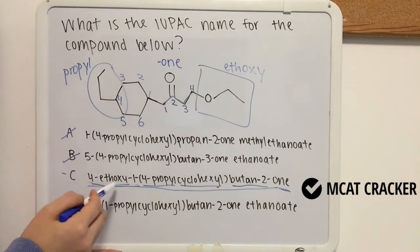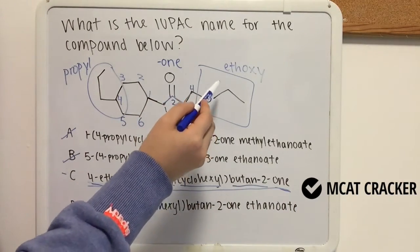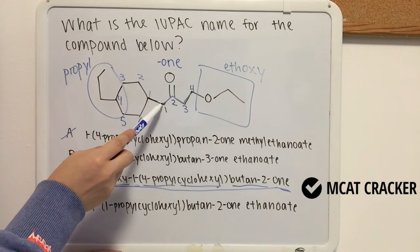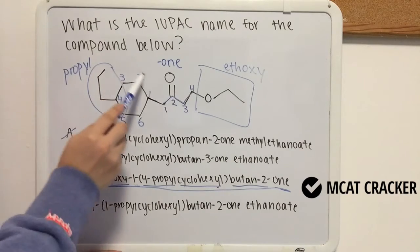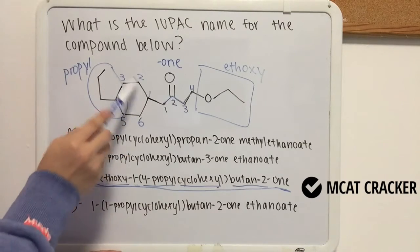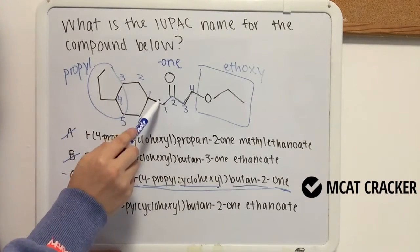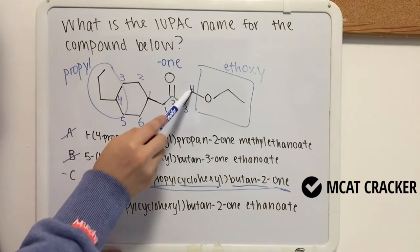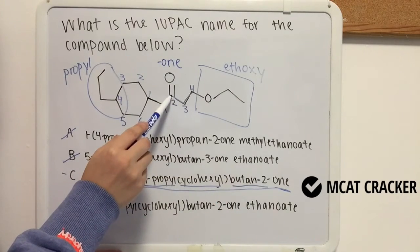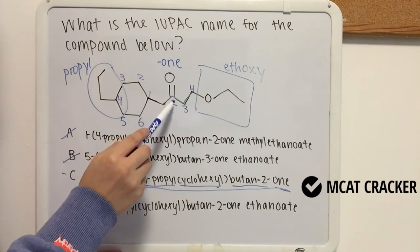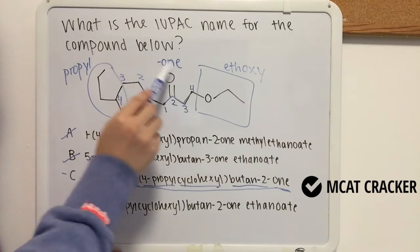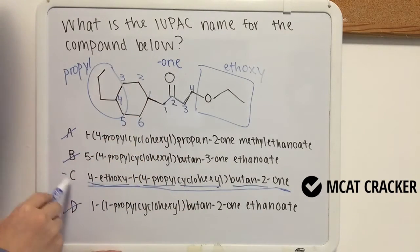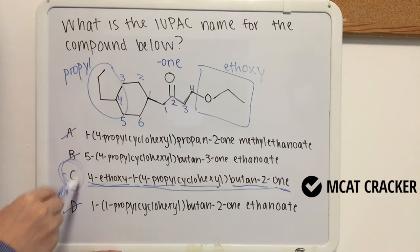Putting it all together: 4-ethoxy, 1-(4-propylcyclohexyl), butan-2-one. Our principal chain has four carbons; 'two' means our ketone carbon is at position number two; and '-one' demonstrates that we have a ketone in the structure. So C is our correct answer for naming this whole compound.